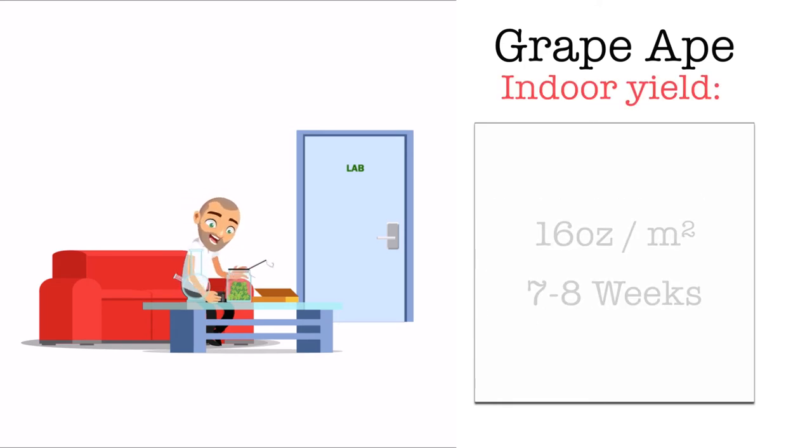Its indoor yield can be up to 16 ounces per square meter with an average flowering time of 7 to 8 weeks.